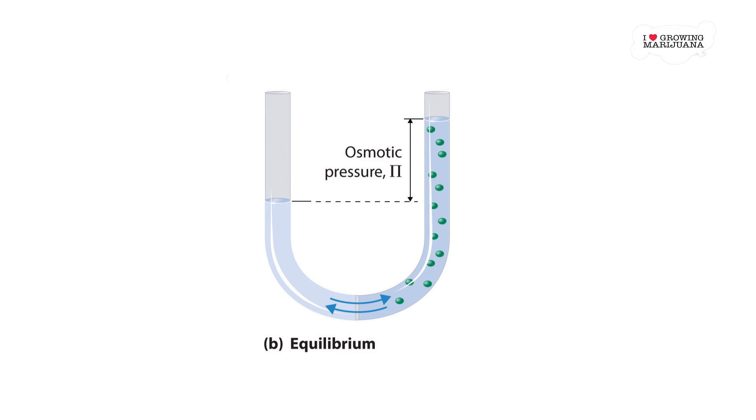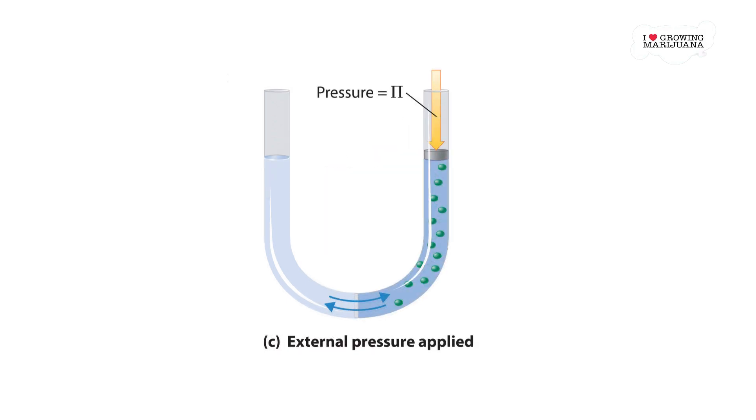This pressure can be referred to as osmotic pressure. If you add even more pressure, you can reverse the flow completely, and the water molecules will begin traveling through the membrane and into the less concentrated liquid, thus achieving reverse osmosis.